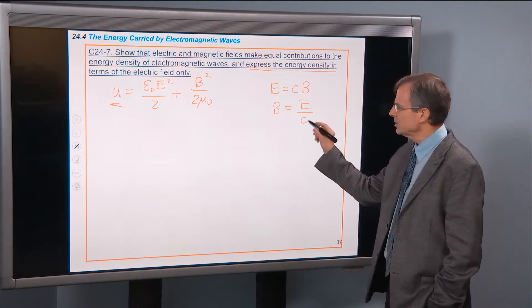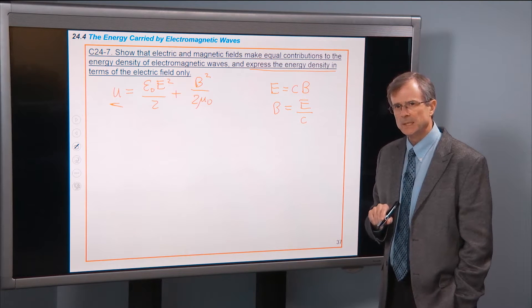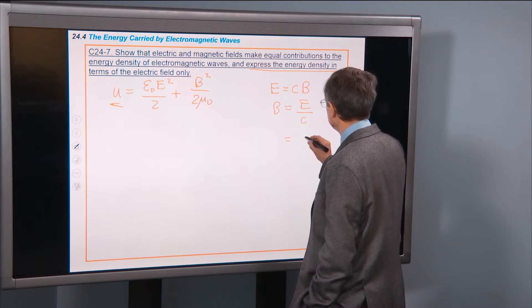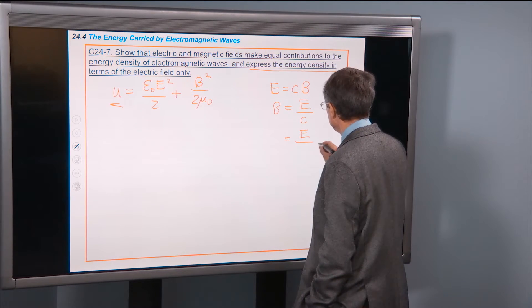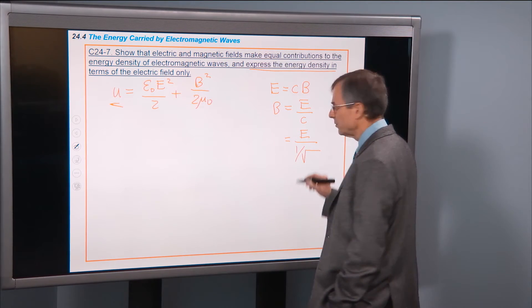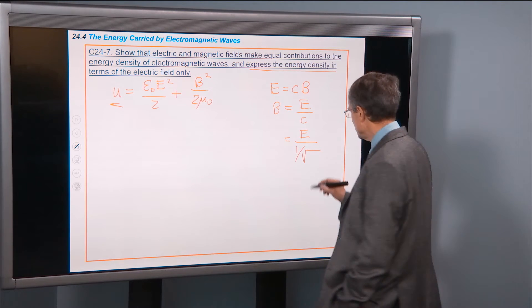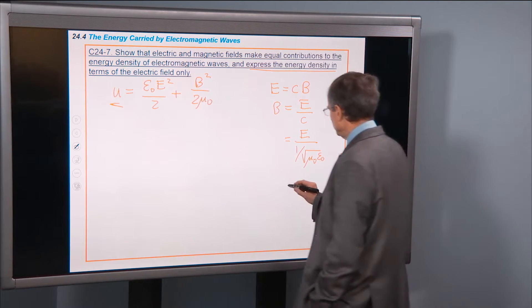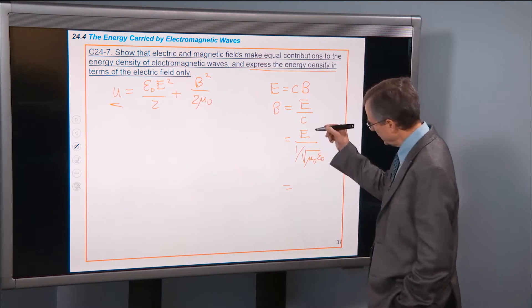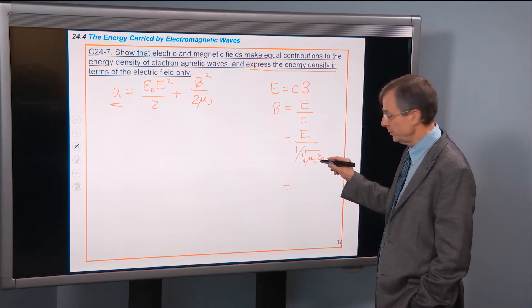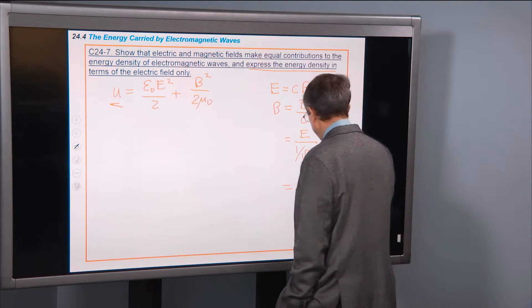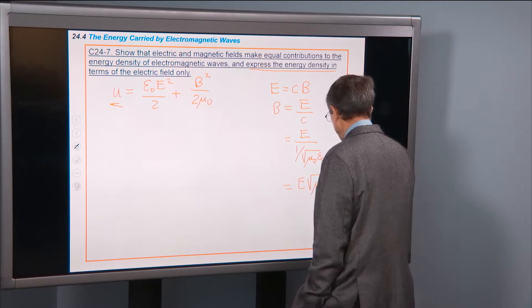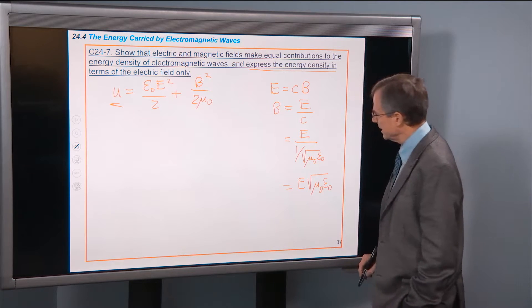But we also know what c is. c is 1 over the square root of μ0 times ε0. Well, e over 1 over this square root is just e times the square root of μ0ε0. If you invert and multiply, you get that. So that's b.